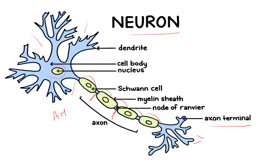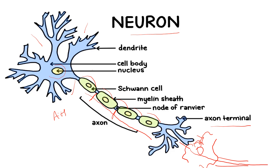After that, this gap is called the Node of Ranvier, and this is called the axon terminal or bouton. The impulse goes into the cell body, then travels along the axon, and the axon terminal passes it to the next neuron. The axon terminal sends the impulse, and then the dendrite of the next neuron continues the same process, carrying the impulse along.